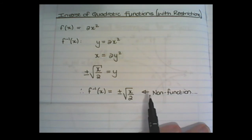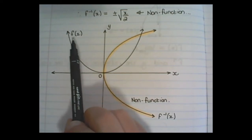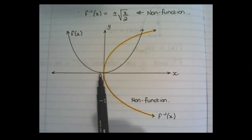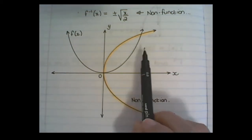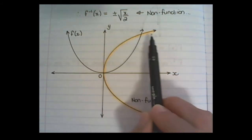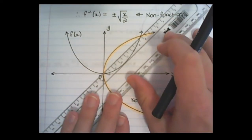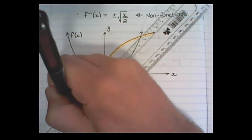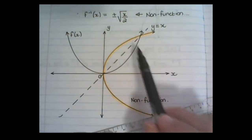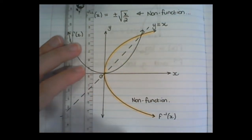In previous videos we have explained that this is a non-function. If I were to plot the function f(x) which equals 2x squared, I would find a parabola in this shape. And if I were to draw its inverse function of plus or minus the square root of x over 2, I would find that the parabola is now tilted on its side, or reflected in the y equals x axis — which is the same as finding the inverse function.